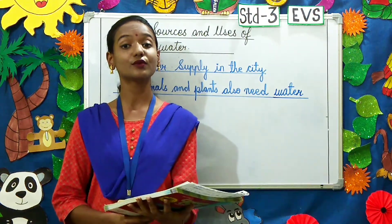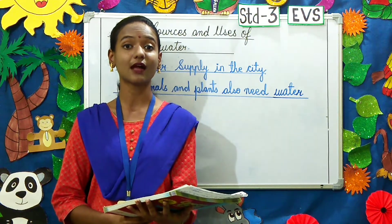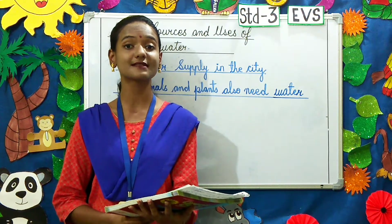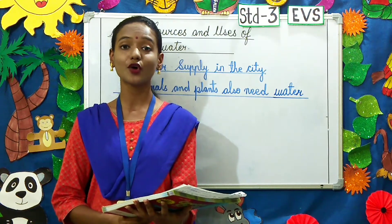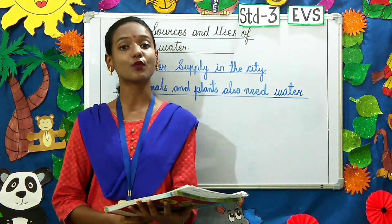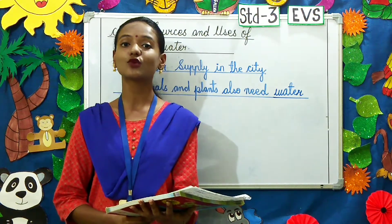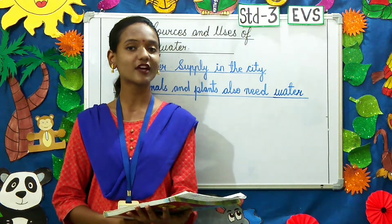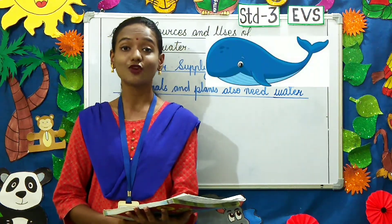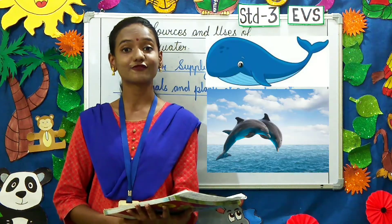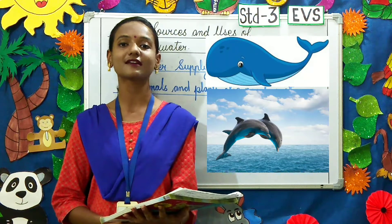Coming to aquatic animals — the word aquatic comes from aqua, which means water. So the animals that live in water cannot survive without water. Can you name some aquatic animals? Whales, dolphins, and fish are some examples of aquatic animals.